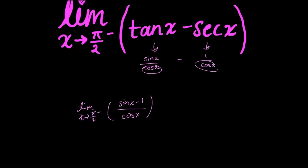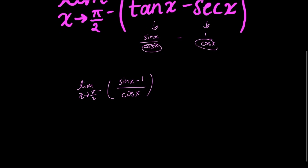Now I'm going to plug in pi over 2 again to confirm that I have it in an indeterminate form. Plugging in pi over 2 for my limit, I get sine of pi over 2 is 1, so 1 minus 1 over 0, because cosine of pi over 2 equals 0. So I have my limit in the form 0 over 0, which is an indeterminate form, which means I can apply L'Hopital's rule.